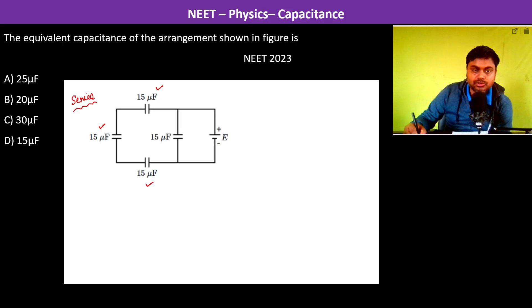Okay, so we can find the equivalent capacitance. So 1 by C is equal to 1 by 15 plus 1 upon 15 plus 1 upon 15, which is equal to 3 upon 15,